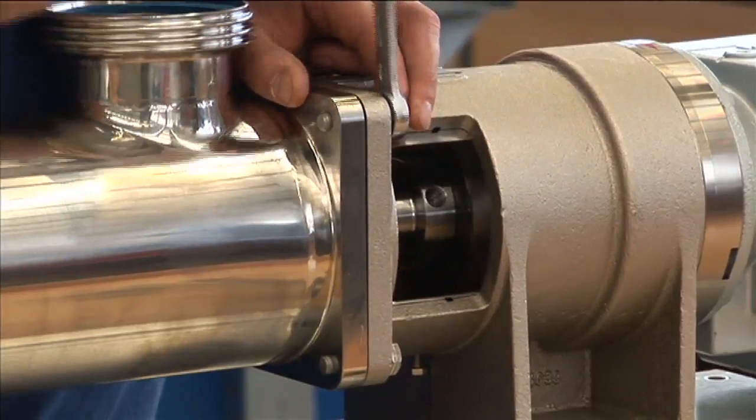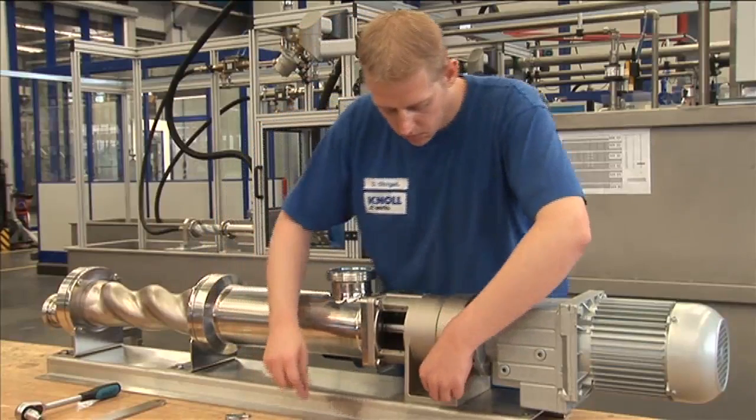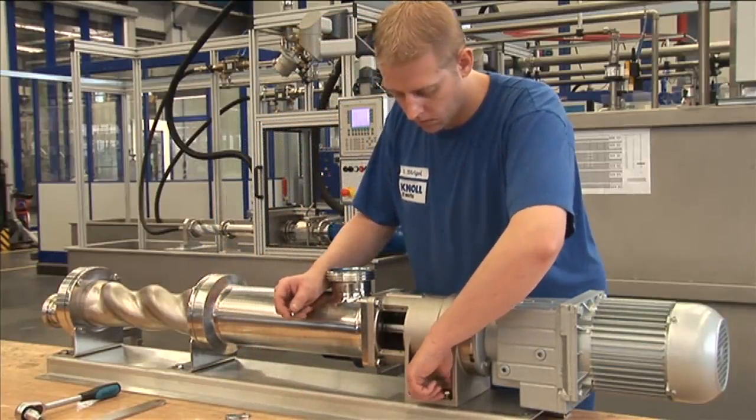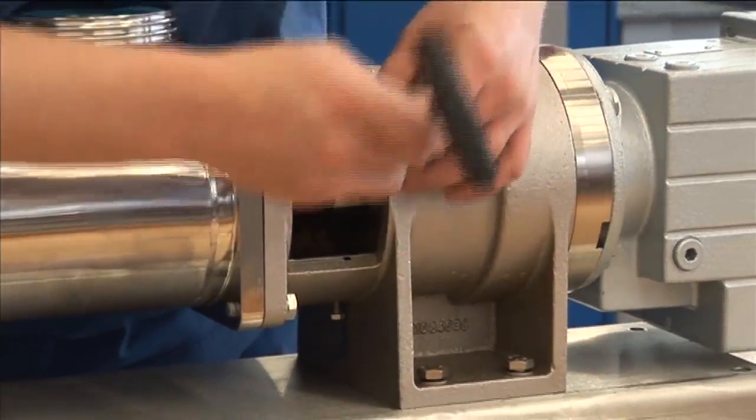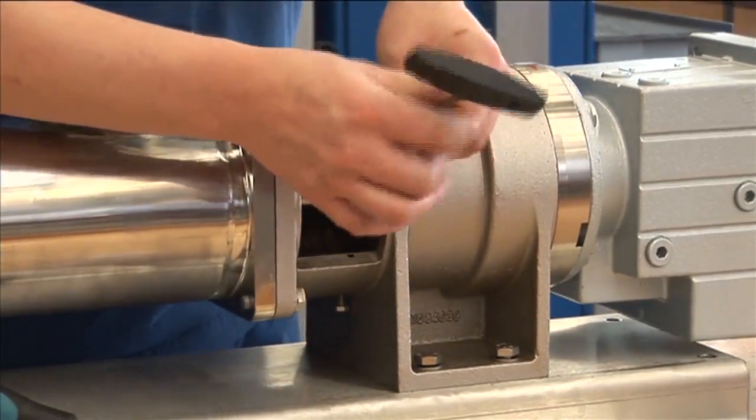Secure the interface between the bearing block and the suction housing. Secure the complete rotating unit axially with the ball screws through the service window.